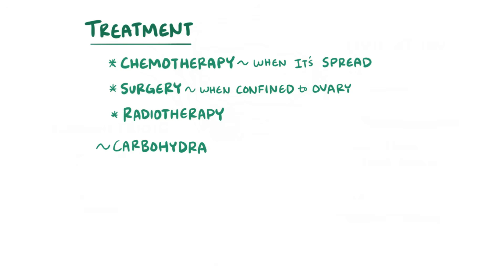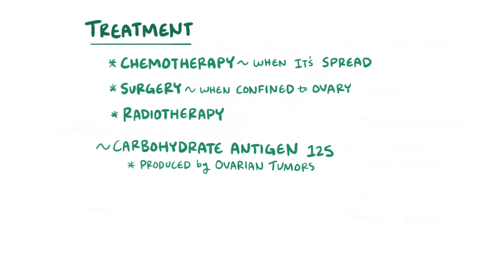Carbohydrate antigen-125, called CA-125, is a protein produced by various types of ovarian tumors, so tracking levels of this biomarker in the blood can help monitor response to therapy and potential relapse.